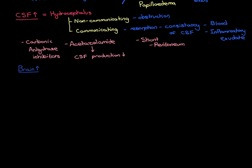However, before we discuss brain tumours, I'd first like to discuss the fact that inflammation occurring in the brain tissue can also lead to an increase in the volume of brain tissue inside the skull, and therefore can lead to intracranial hypertension. The fancy word for inflammation inside the brain is encephalitis. Be aware that encephalitis strictly means inflammation inside the brain rather than infection, but of course infection will cause inflammation — so infection will cause encephalitis.